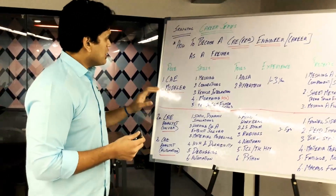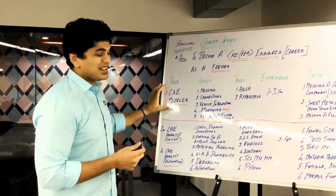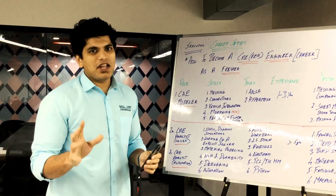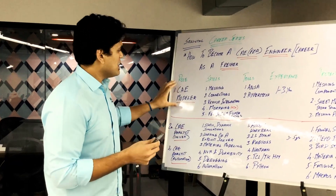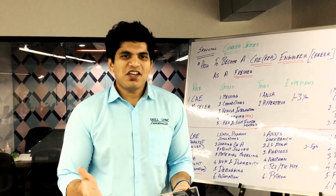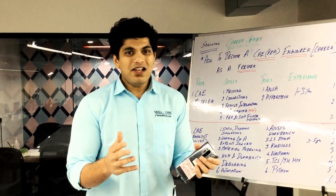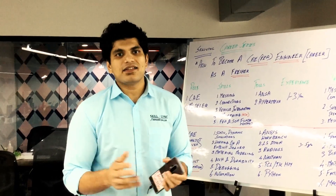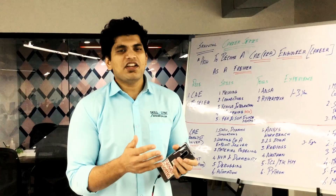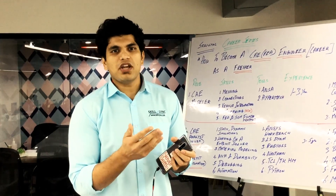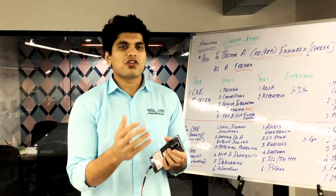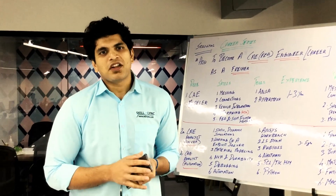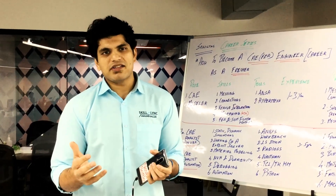If you're a fresher, the role you will be applying for is CAE Modeler. This role can have multiple names, but the essence of it will be CAE Modeler. Before getting into how to become a CAE engineer, let's explain what CAE Analysis is. CAE Analysis is called Computer Aided Engineering Analysis, or also FE Analysis — Finite Element Analysis. It's essentially structural analysis.